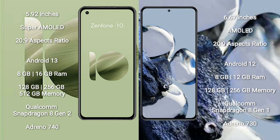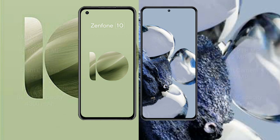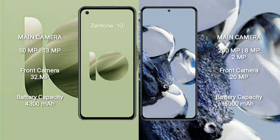The Xiaomi 12T Pro comes with 8GB or 12GB RAM and 128GB to 256GB internal storage. It features a Qualcomm Snapdragon 8 Gen 1 processor and Adreno 730 GPU.